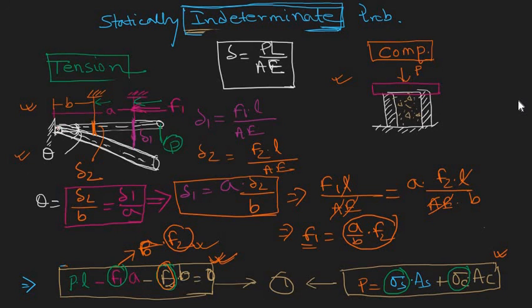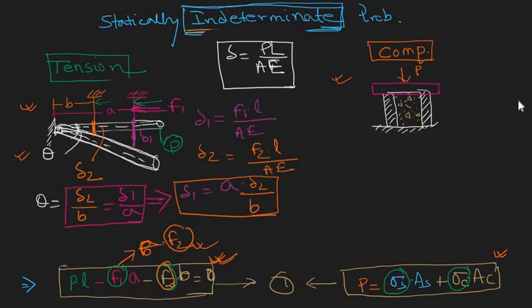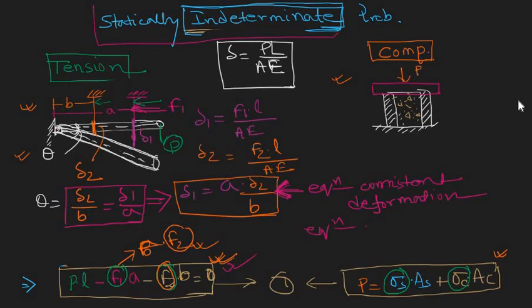I'll leave solving the final step to you. The key thing to note is that this compatibility relation — delta one equals (A/B) times delta two — is the hotkey to solving this statically indeterminate problem. This equation is known as the equation of consistent deformation, or the equation of compatibility. You may encounter both terms.